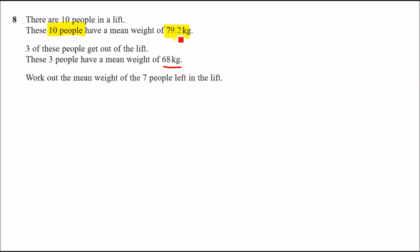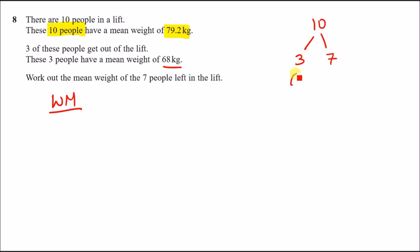For this kind of question we always use the weighted mean equation. We split the 10 people into two groups: group A which is 3 people and group B which is 7 people. Group A has a mean weight of 68 kg, so we write 3 times 68 for group A's contribution.